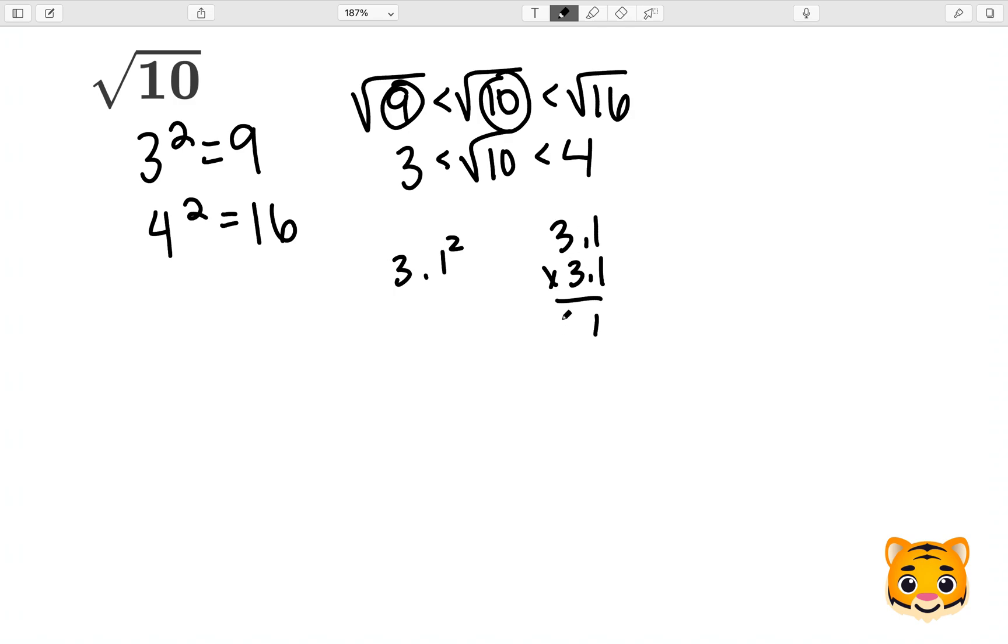Let's look at 3.1 squared. 1 times 1 is 1, 3 times 1 is 3. Add our 0, 3 times 1 is 3, and 3 times 3 is 9. Now we can see we get 9.61, which is close to 10, but let's see if we can find something a little bit closer.